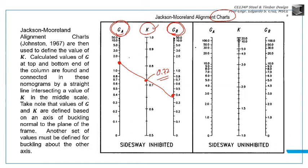If you notice, there are two charts. The left side is sidesway inhibited. Sidesway inhibited means non-sway or braced frame. Sidesway inhibited means prevented sidesway - no sidesway.